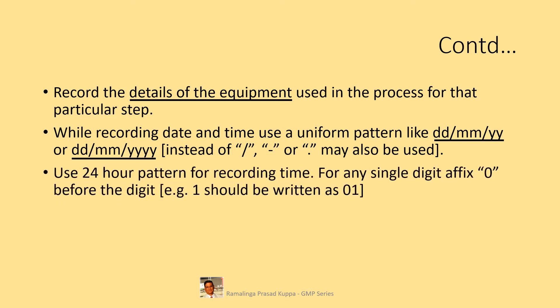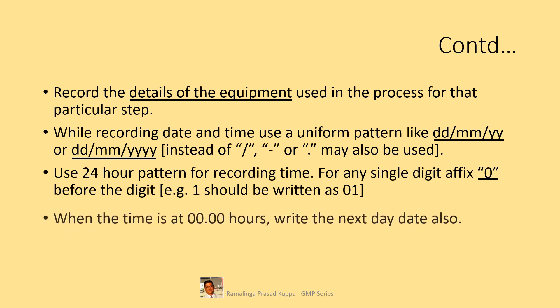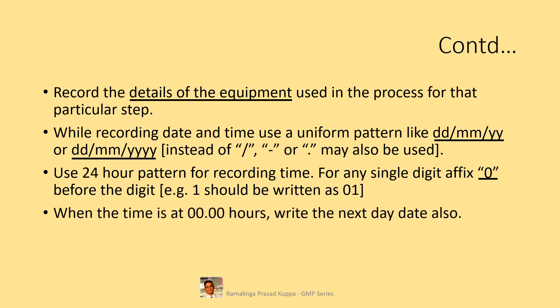Use a 24-hour pattern for recording time. For any single digit, affix a 0 before the digit — for example, 1 should be written as 01. This is required as the process runs round the clock and it is easier to understand the flow of timing. When the time is midnight at 0000 hours, write the next date there as well.